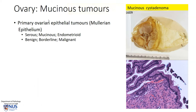Mucinous tumors of the ovary are primary ovarian epithelial tumors, and these derive from Mullerian epithelium. The three main histologic types are serous, which is the commonest, mucinous, and endometrioid. And all of these can be benign, borderline, or malignant.